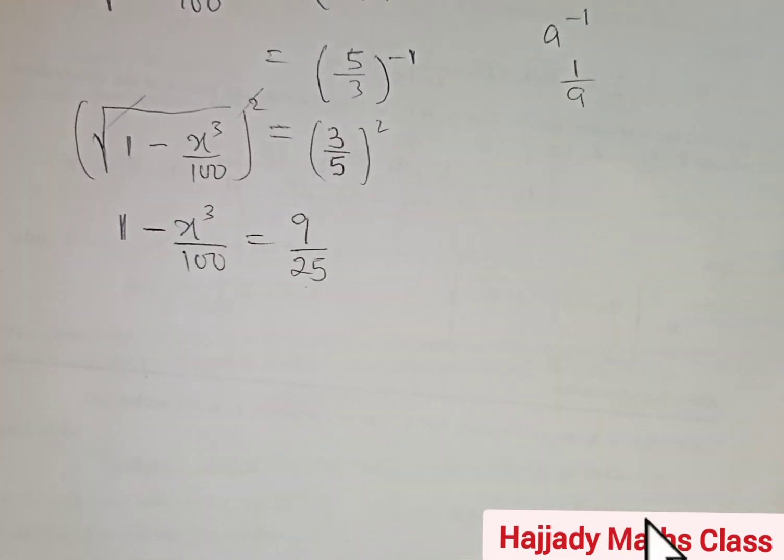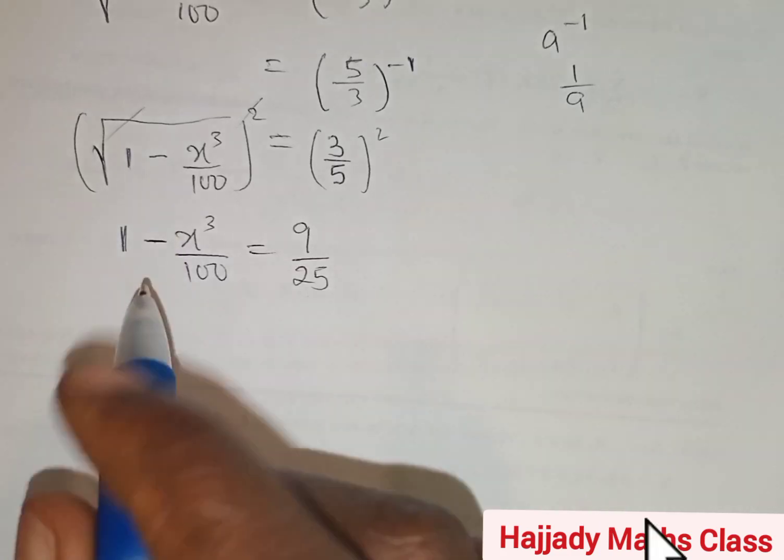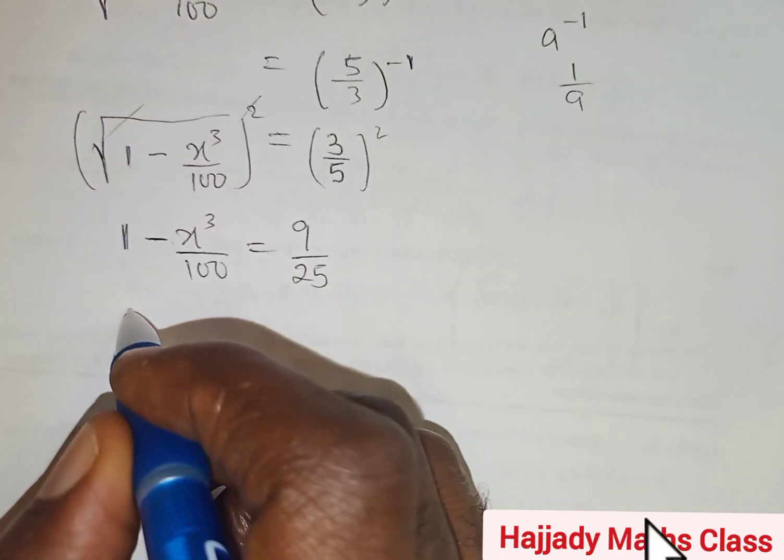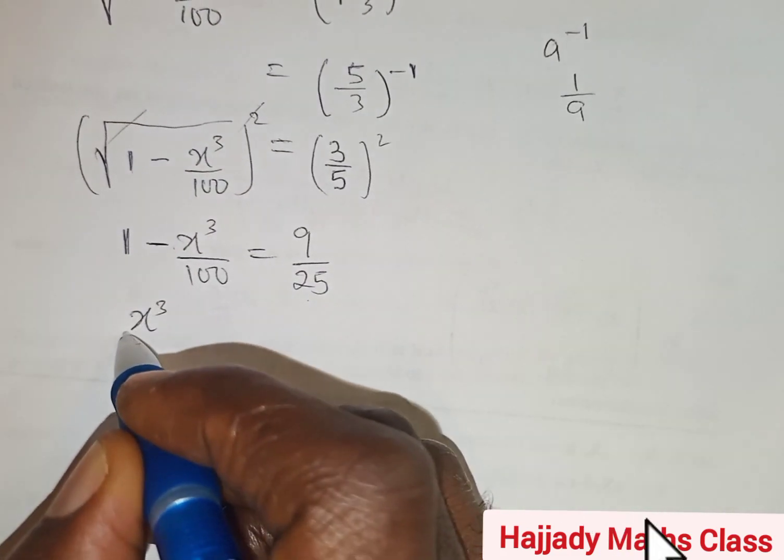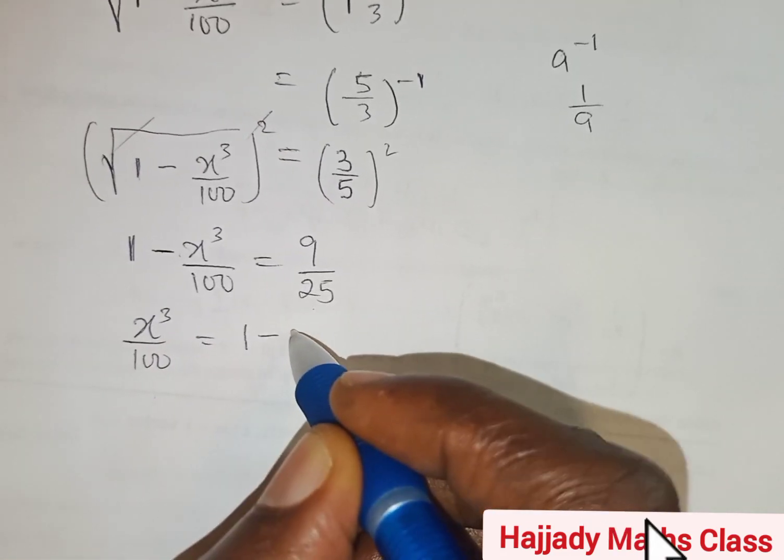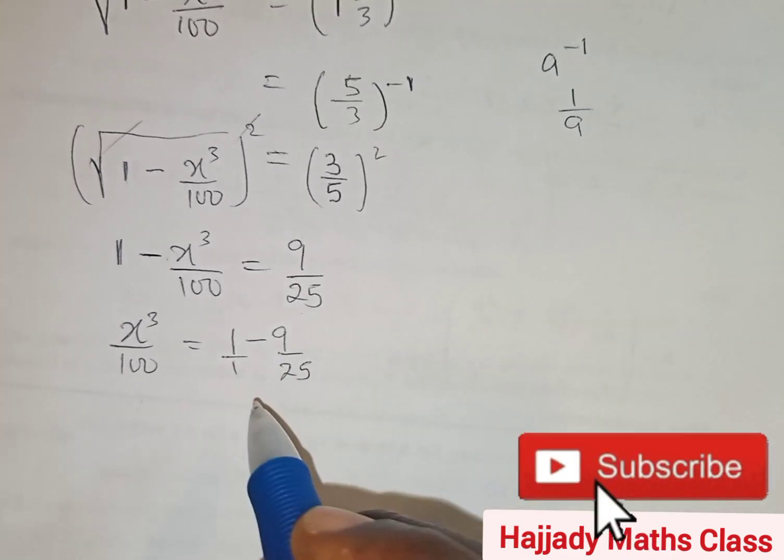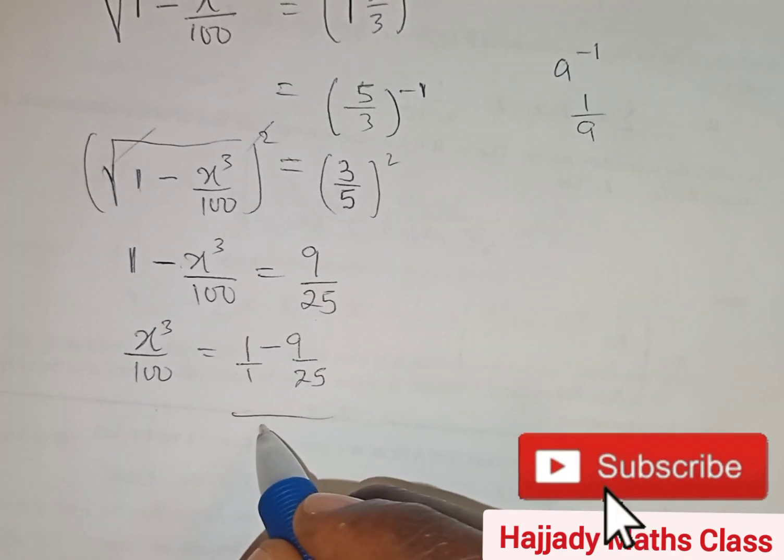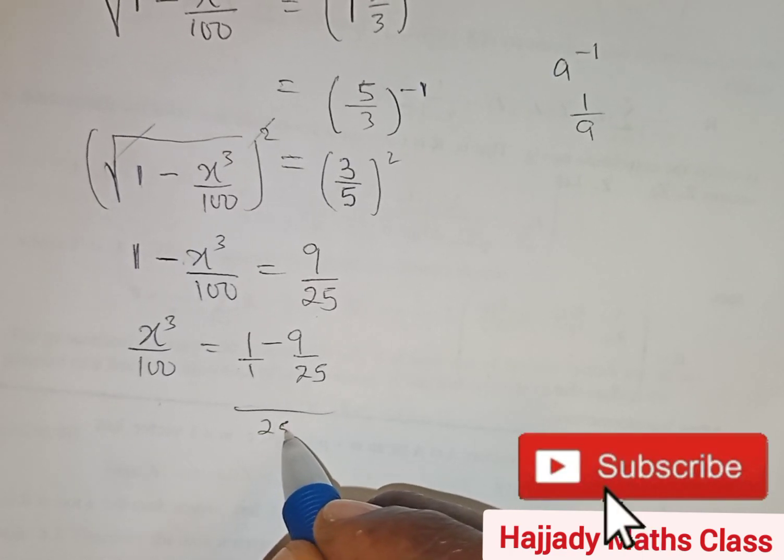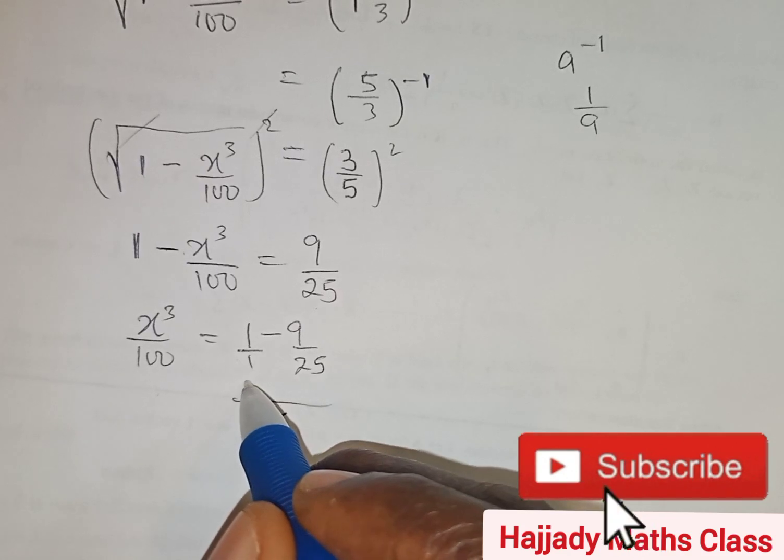Now solving for that, we can make x the subject of the formula by moving it to the right hand side. We are going to have x raised to power 3 over 100 equal to 1 minus 9 over 25. So doing our LCM, we have the lowest common multiple to be 25. 1 in 25 is 25 multiplied by 1, we have 25.